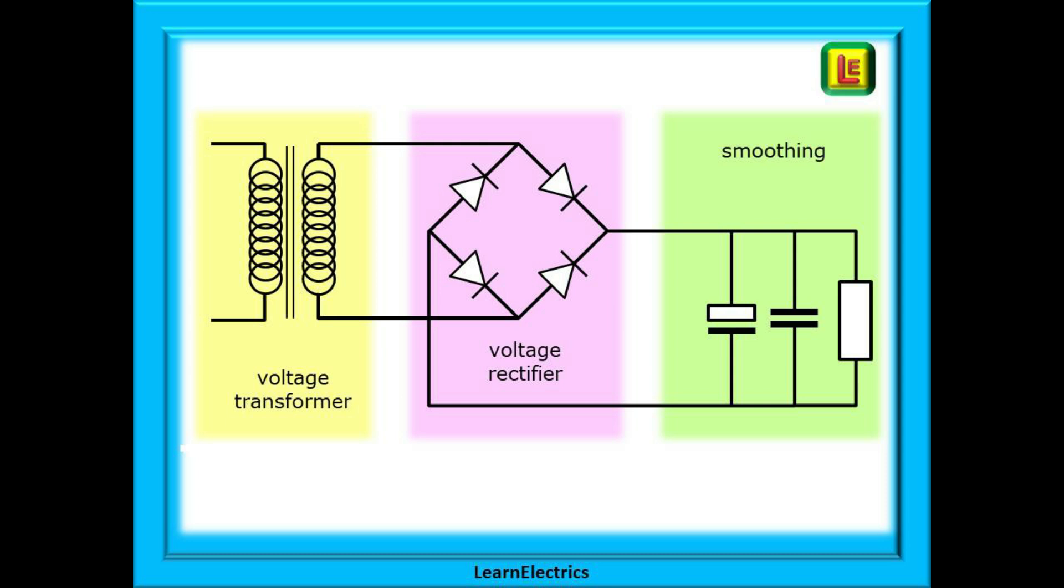This helps with the understanding and our three blocks were the transformer part that reduces the line voltage to a lower voltage, the diodes, the voltage rectifier part that converts the AC into DC, and the smoothing part, the capacitors and voltage regulators that give us a nice smooth DC output.